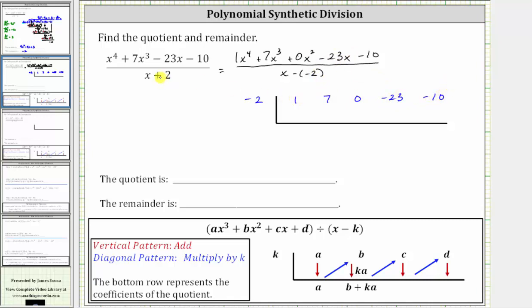Notice when the divisor has addition, k is negative. If we had subtraction, k would be positive. And now to begin the process of synthetic division, we begin by bringing down the first coefficient of one, and then on the diagonal, we multiply by k and place that value in the next column, and vertically we add.